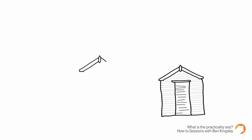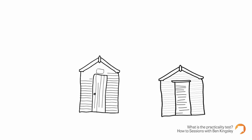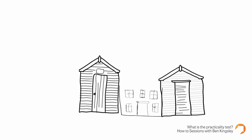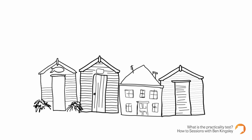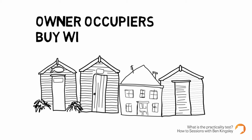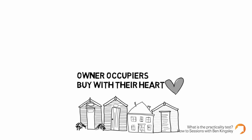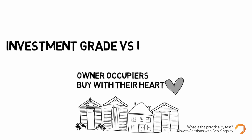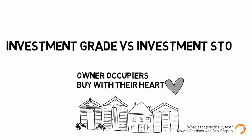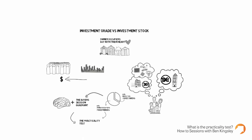This leads into the view around where mainstream audiences make their decisions about where they want to buy. This is really important because owner-occupiers drive the value — they buy with their heart, not their heads. So investors need to get on those coattails to identify what we call investment grade property, as opposed to investment stock, which a lot of investors mistakenly buy and get poor returns from.